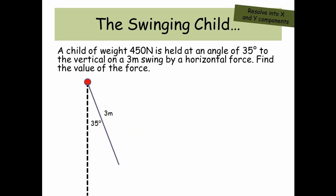The swinging child. A child of weight 450 newtons is held at an angle of 35 degrees to the vertical on a 3 meter swing by a horizontal force. Find the value of the force. OK, so we've got 450 newtons going down and we've got a force going horizontally which we don't know the value of. And we've also got a tension in the rope going up the rope.